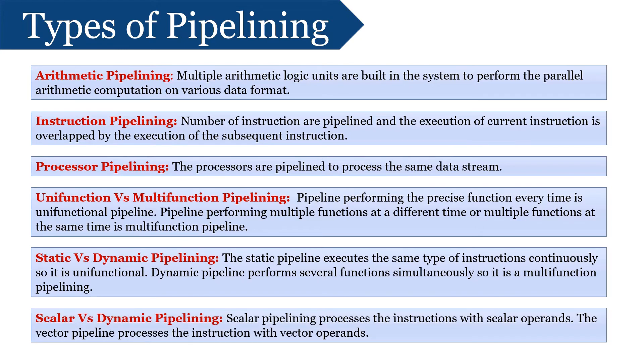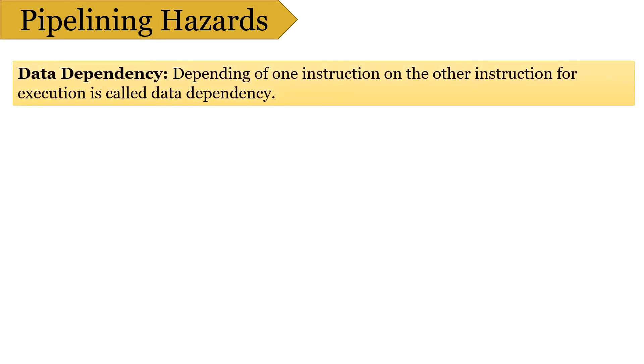Next is Scalar vs Vector Pipelining. Scalar Pipelining processes the instruction with scalar operands, whereas Vector Pipeline processes the instruction with vector operands. Now, sometime a pipeline has to stall or stop due to some reasons. This is called Pipelining hazard. The first hazard is Data Dependency.